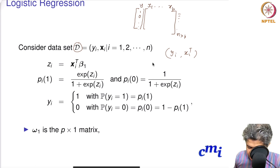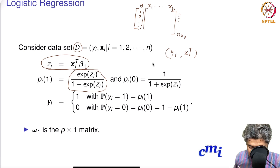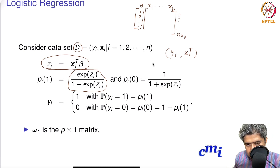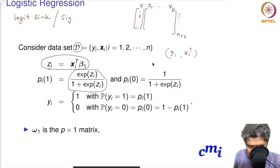Once you have that, zi equals xi-transpose times beta. Once you compute zi, you put e to the power zi divided by one plus e to the power zi. This is called the logit link in statistics and the sigmoid function in machine learning.